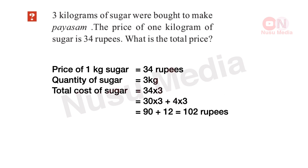The price of 1 kilogram of sugar is 34 rupees. The quantity of sugar is 3 kilograms. This is the total cost of sugar. We have 34 Rs. multiplied by 3. Let's multiply: 30 into 3 plus 4 into 3. 30 into 3 is 90, plus 4 into 3 is 12. 90 plus 12 is equal to 102 rupees.